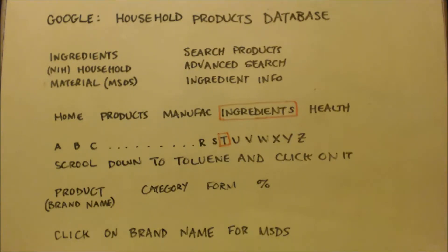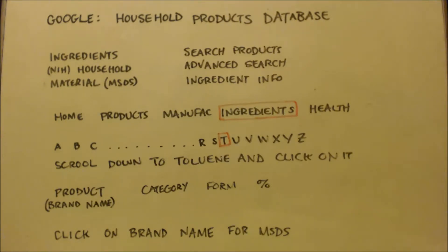They'll show you a list of products with their brand name, and then the category — like arts and crafts or automotive — the form it comes in, like liquid or aerosol, and the percentage of toluene in that product, whether it says 30, 20, 0.1, or whatever.